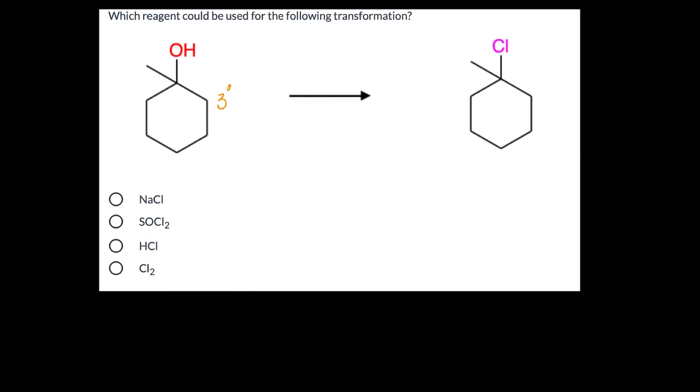Here we're going from a tertiary alcohol to a tertiary alkyl halide. We know that these reactions occur by SN1, which means we're going to need acid to protonate this hydroxyl group and enable it to leave as neutral water.